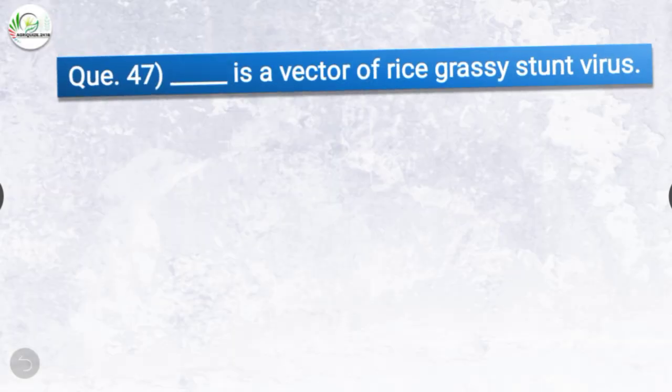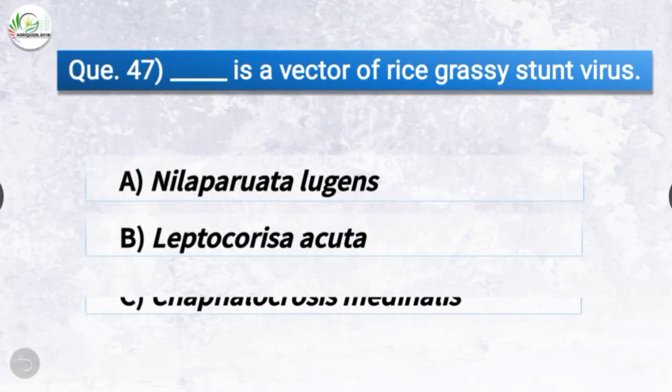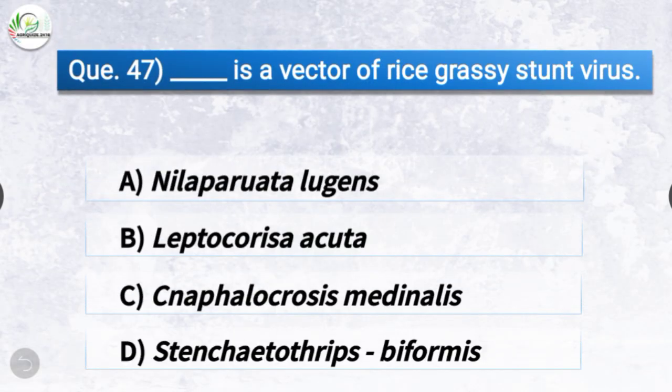Question number forty-seven: Dash is a vector of rice grassy stunt virus. The correct answer is option A, Nilaparvata lugens — Nilaparvata lugens is a vector of rice grassy stunt virus.